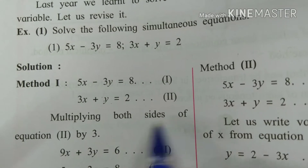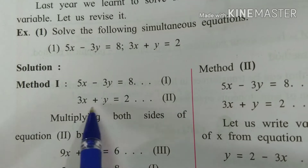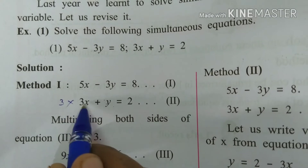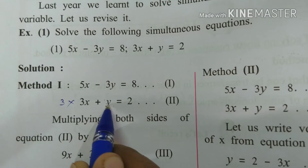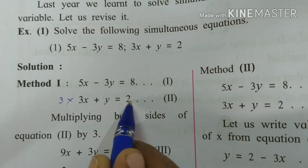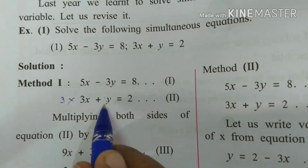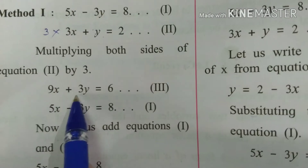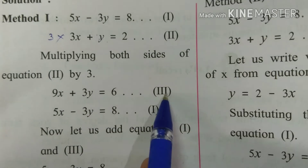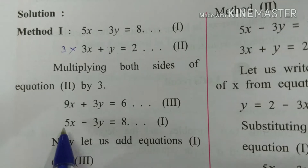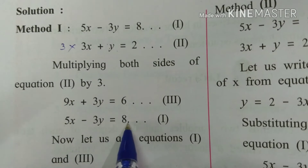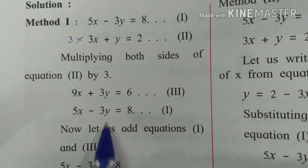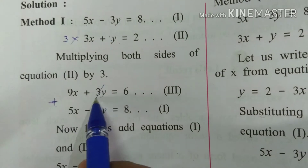We are multiplying both sides of equation 2 by 3. So 3 multiplied by 3x plus y equals 2 gives us 9x plus 3y is equal to 6. Now adding: 5x minus 3y is equal to 8, and 9x plus 3y is equal to 6.